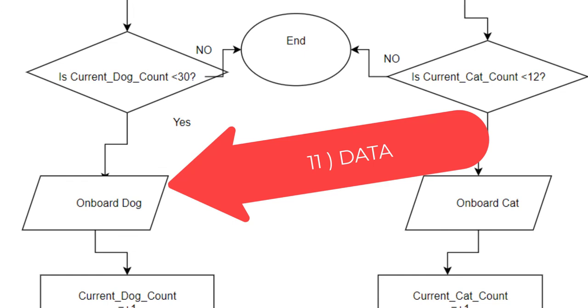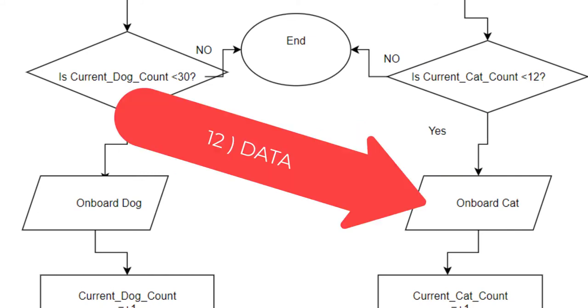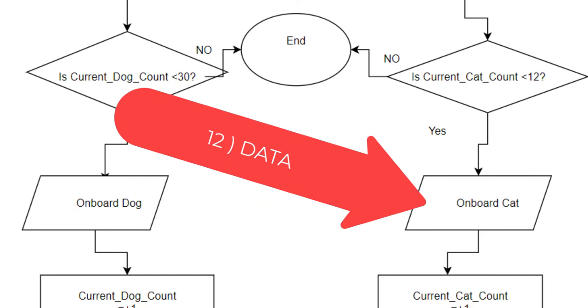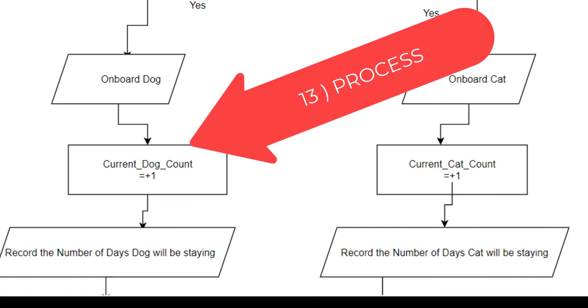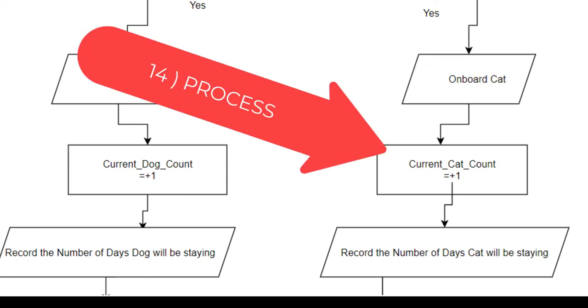Let's move on. So the current dog count is less than 30. So we have a yes answer. We go to onboard dog, which is a data entry. We're going to do the same thing for the cat. If the cat count is less than 12, we will onboard the cat. So the next step is a process. In this step, we are adding plus one to the current dog count. We're going to do the same thing for the cat. We're going to add plus one for the cat count.